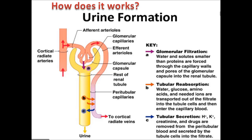In glomerular filtration, water and solutes smaller than proteins are forced through the capillary walls and pores of the glomerular capsule into the renal tubule. The impure molecules, water and solid portions are extracted to the Bowman's capsule and carried down to the rest of the renal tubule. Next comes tubular reabsorption. The tubule consists of the distal convoluted tubule, proximal convoluted tubule and loop of Henle.